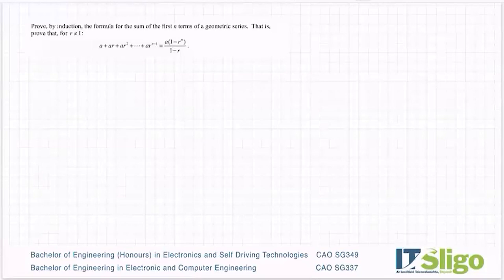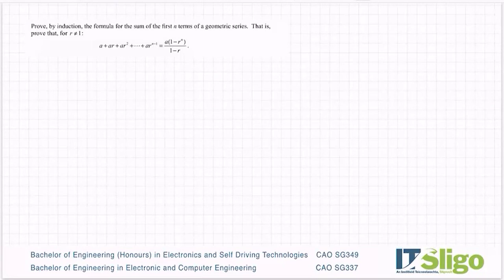Prove by induction the formula for the sum of the first n terms of a geometric series. That is, prove that for r not equal to 1, a plus ar plus ar squared plus dot dot dot plus ar to the n minus 1 equals a times 1 minus r to the power of n over 1 minus r.